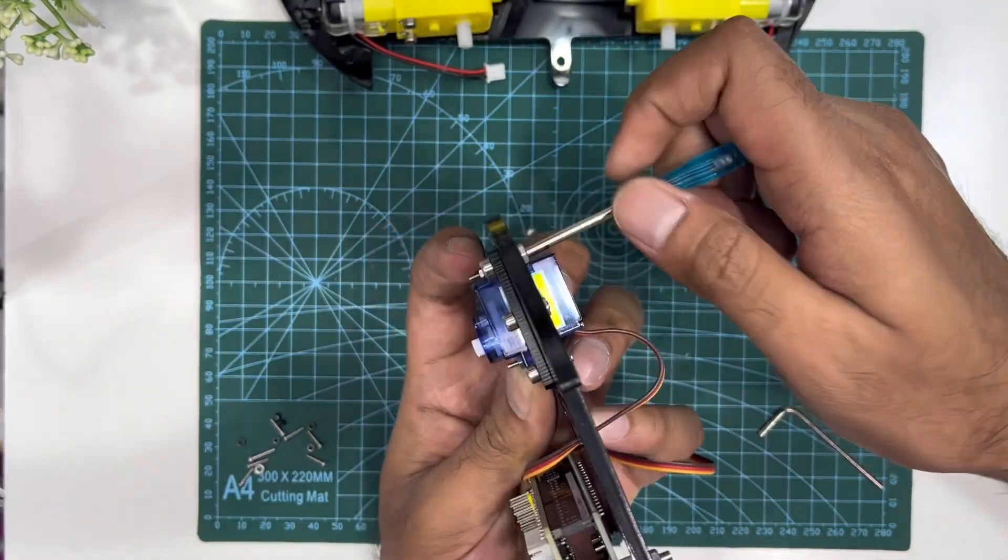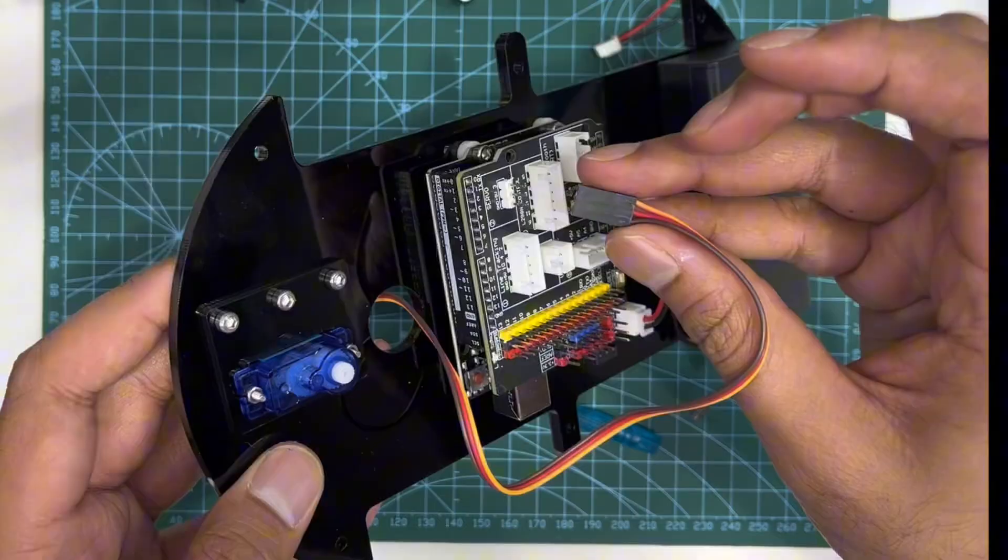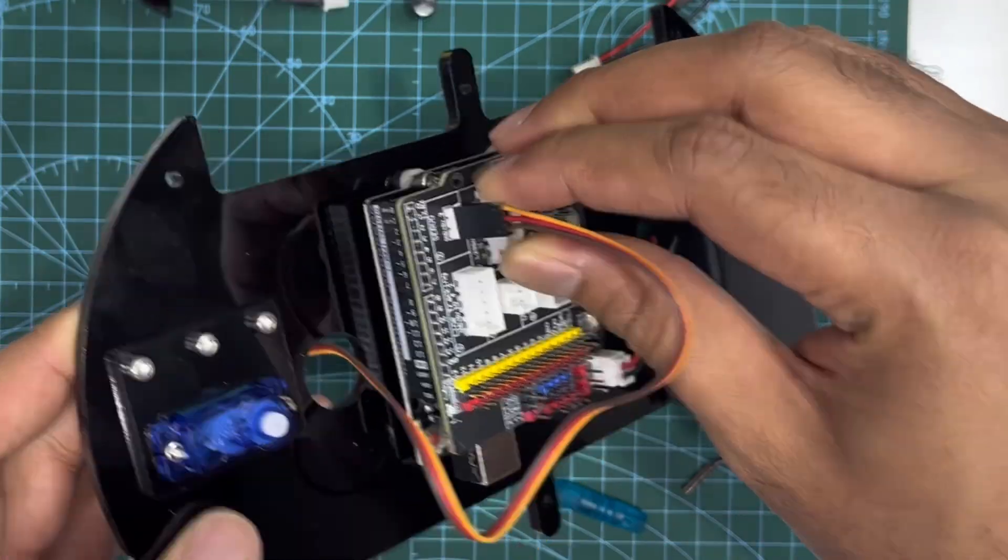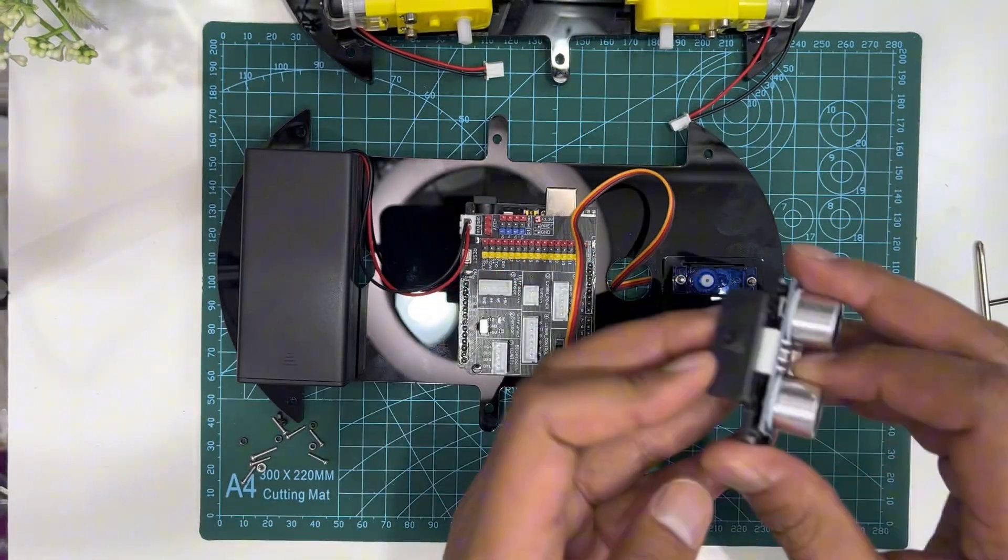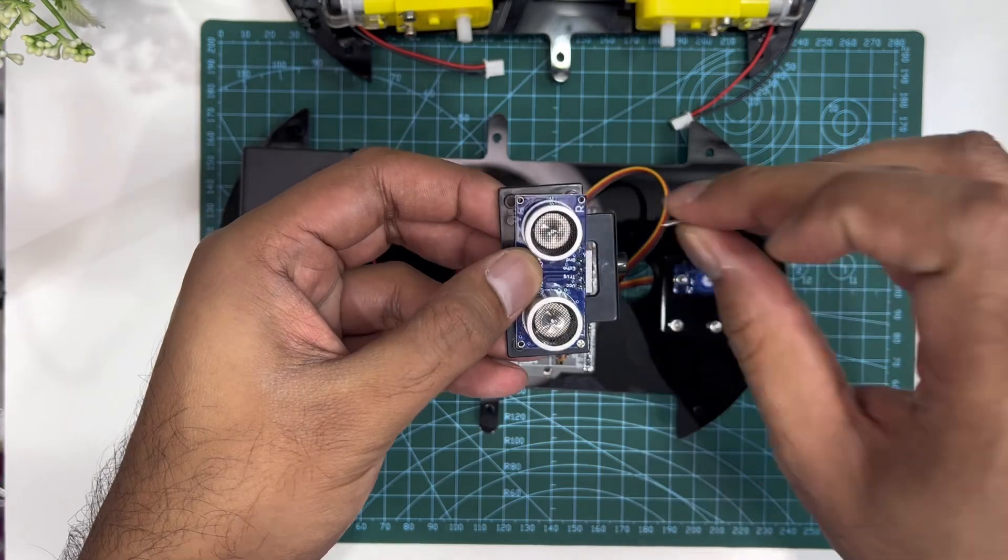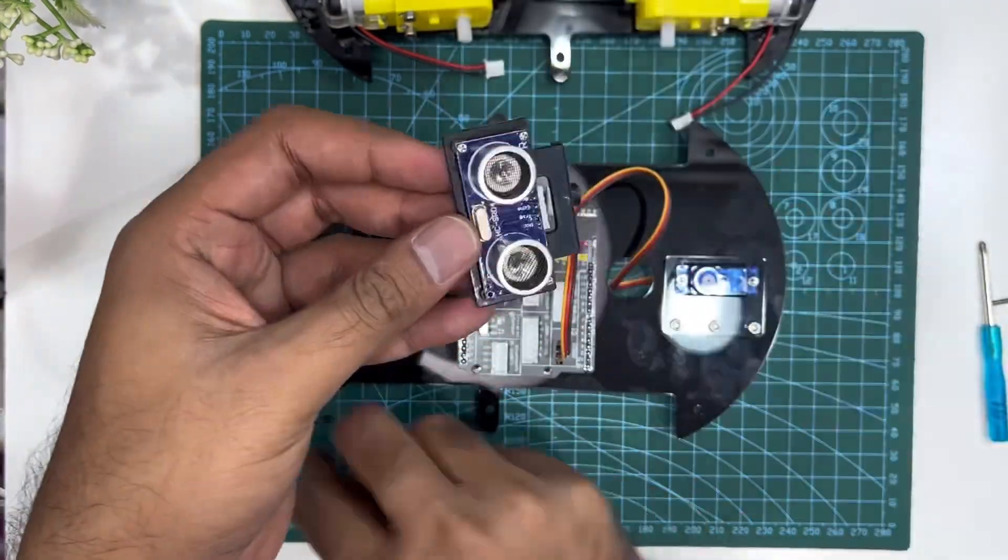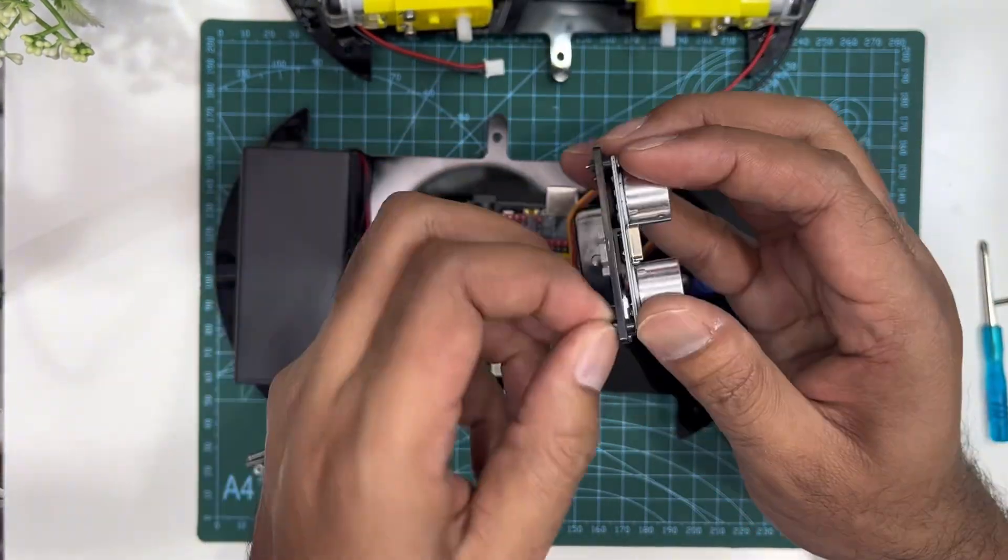Mount the servo motor to the servo slot from the expansion board, then the ultrasonic sensor module with its holder. We will use the tiny M1 by 6 screws for this.